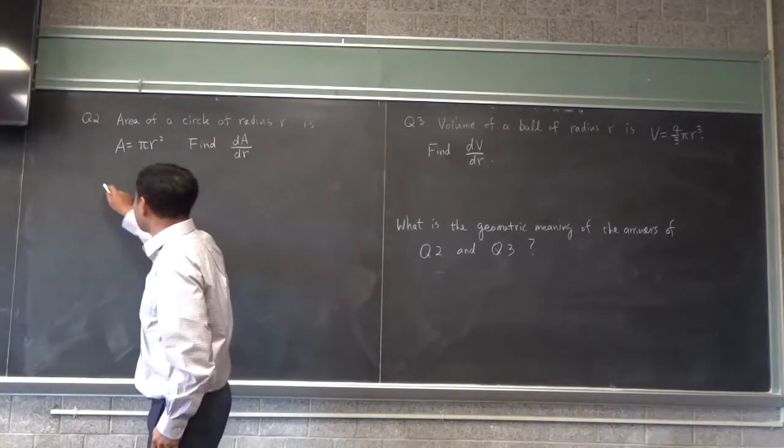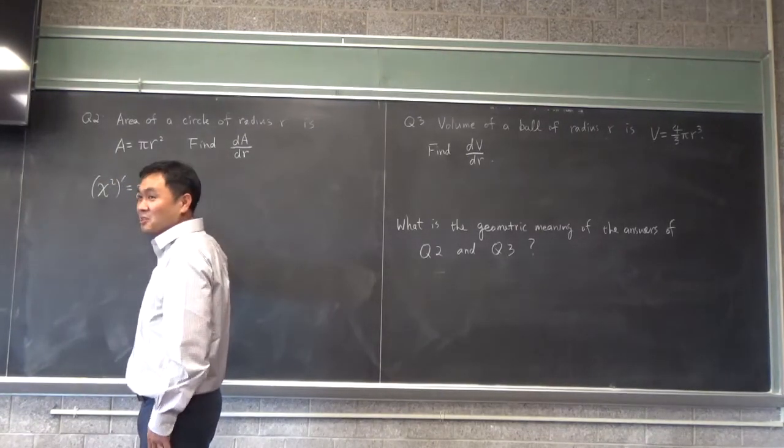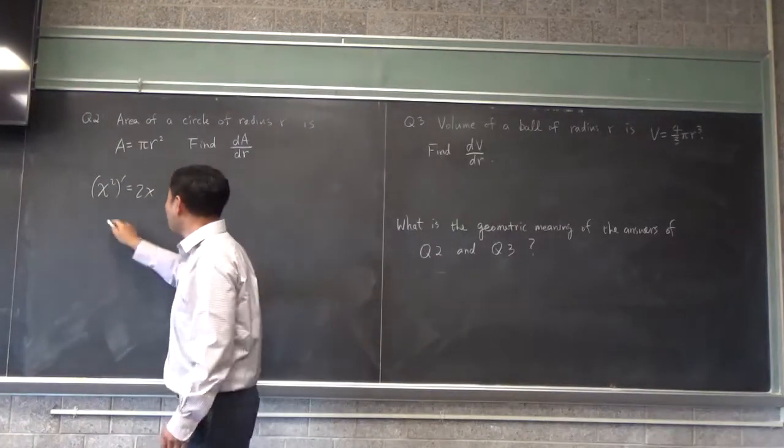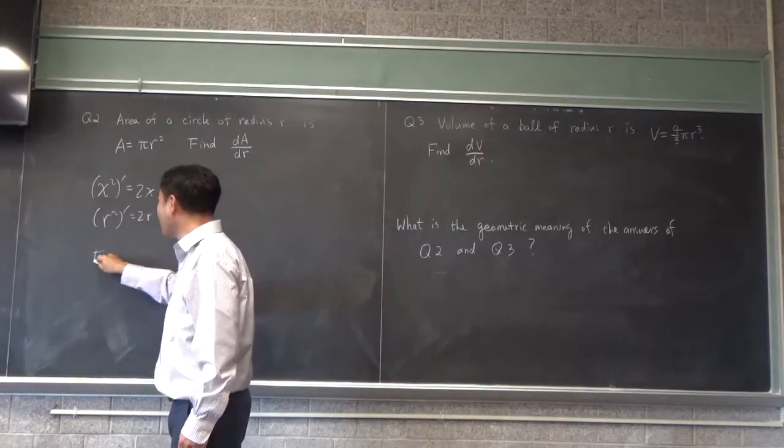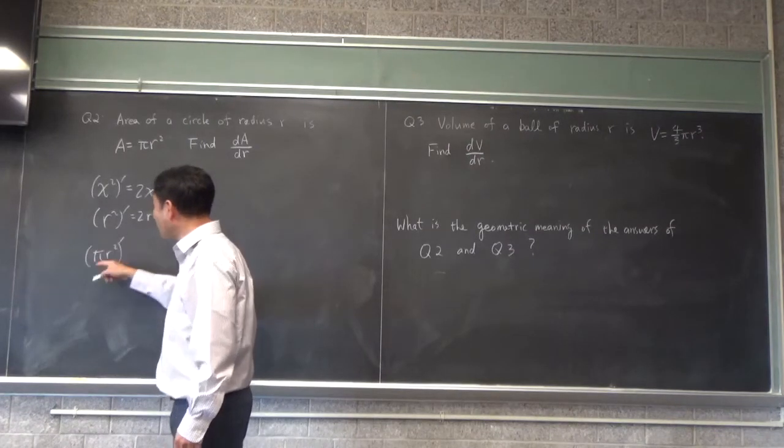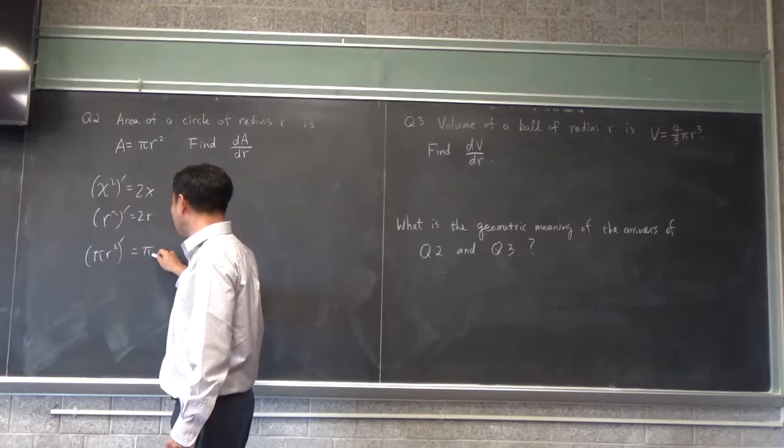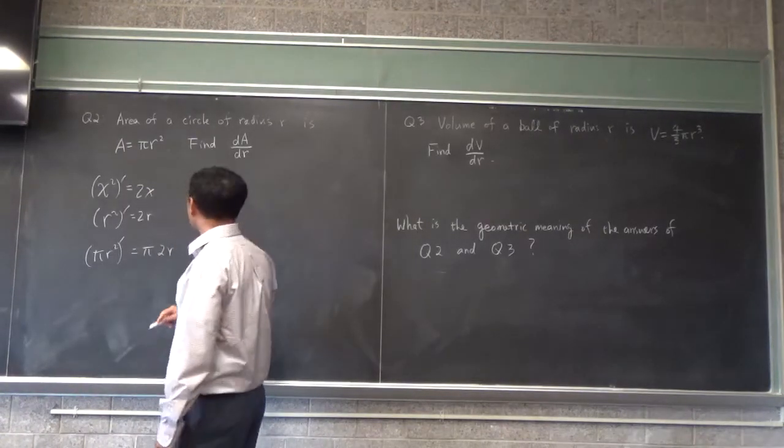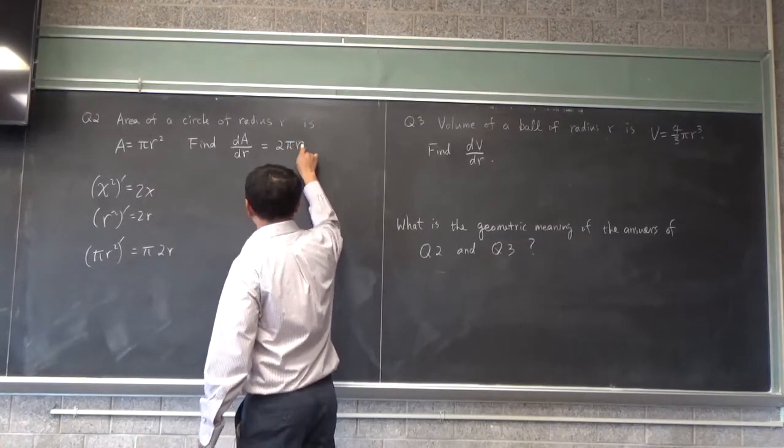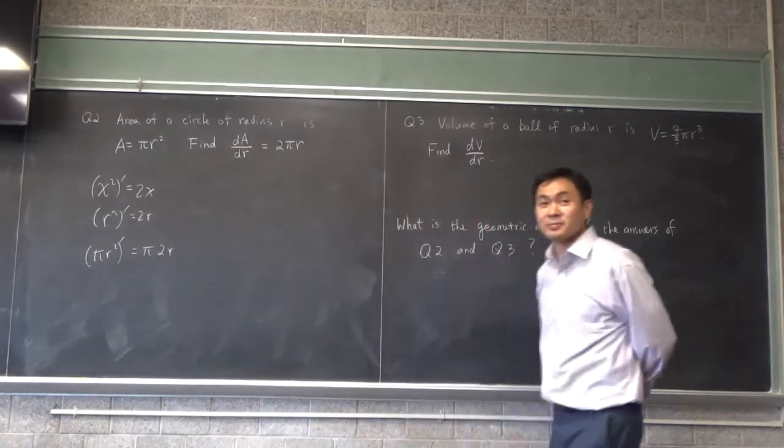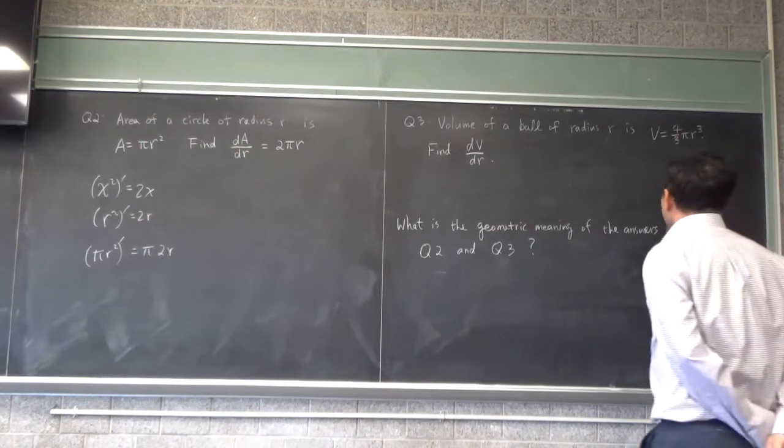So it's like this: what is x² prime? 2x. Everyone knows, right? What is r² prime? 2r. What is πr² prime? Well, π is just a number, so that goes out and the answer is 2πr. Usually you want to write 2 before π.